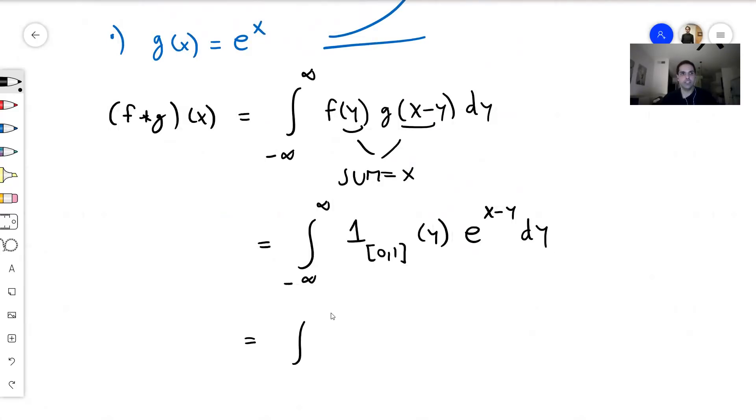So this becomes an integral from 0 to 1 of, the indicator just becomes the function 1, so this just becomes e to the x minus y, dy.